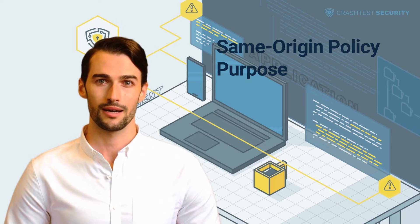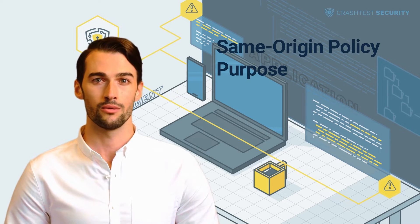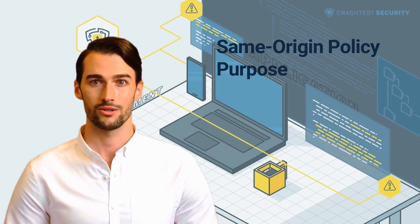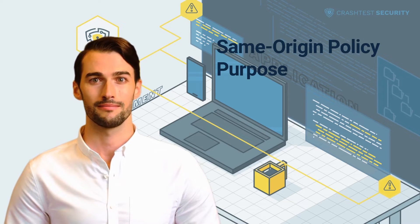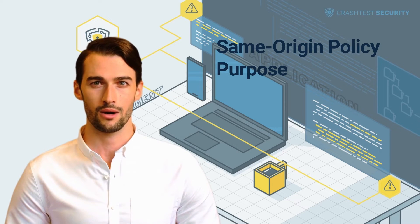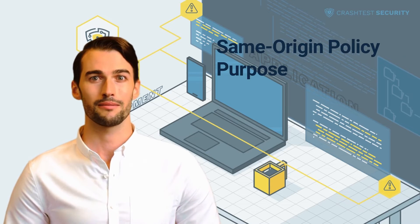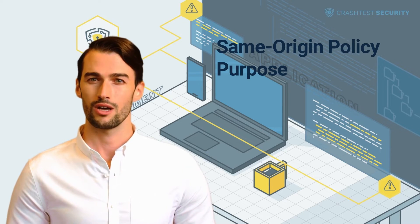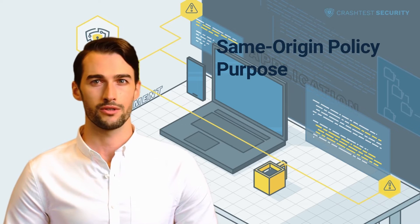Cookies cannot be sent to a page with a different origin, though in this case this only applies to pages with other domain subdomains, whereas schema and port are not checked. Ajax requests such as XMLHttpRequest are not allowed under SOP, though this is possible if cross-origin resource sharing is implemented. Even when embedded, JavaScript cannot read content on a website with a different origin.